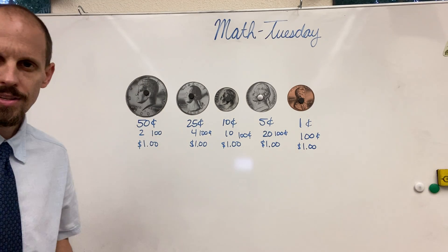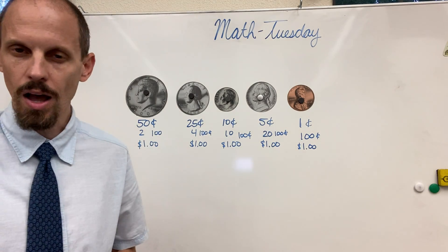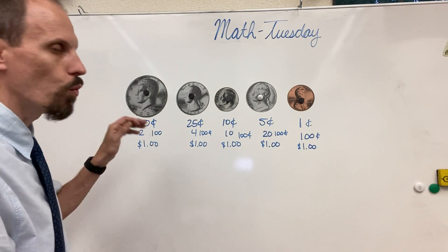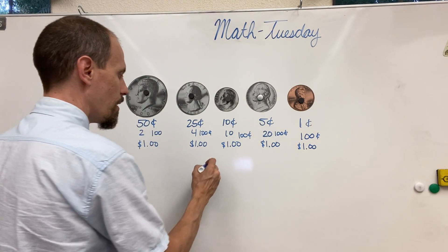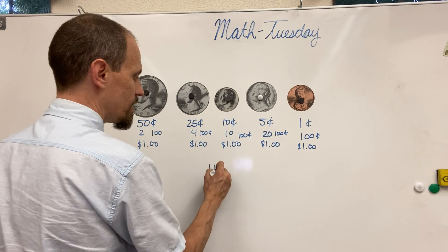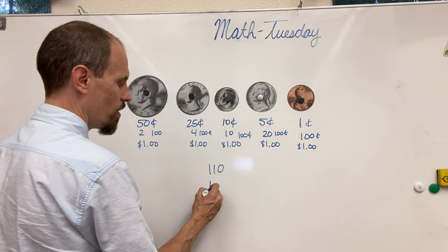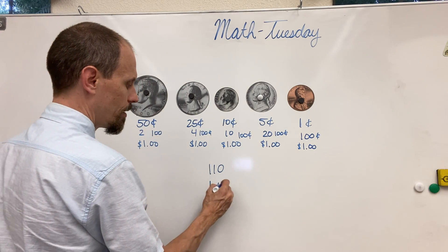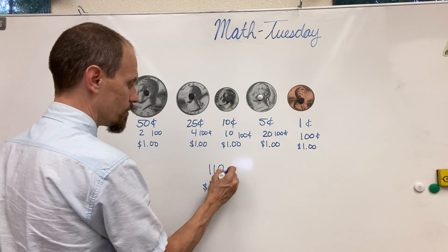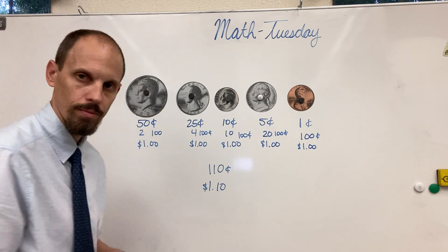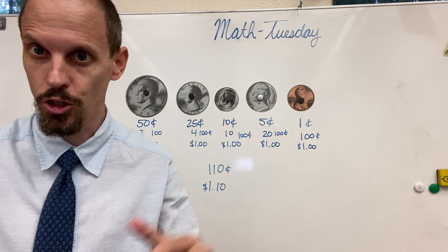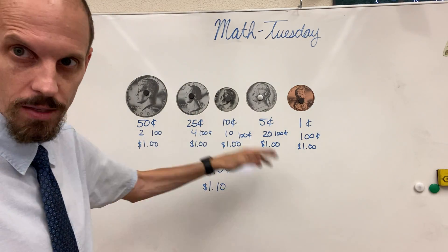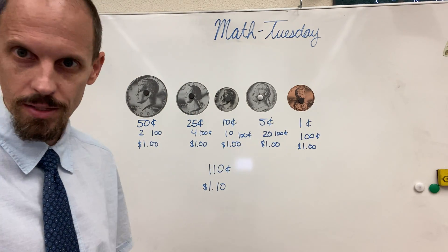Remember, 100 cents is $1. So if I have 110 cents, that means I have $1 and 10 cents. Make sense? Does it make sense to you? We're talking about cents — hopefully it makes sense.